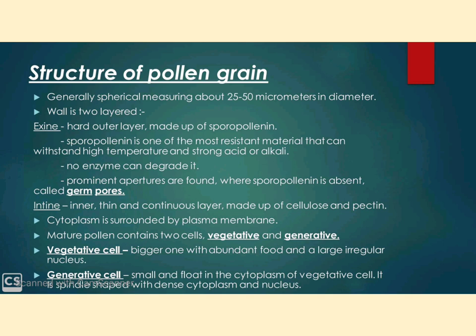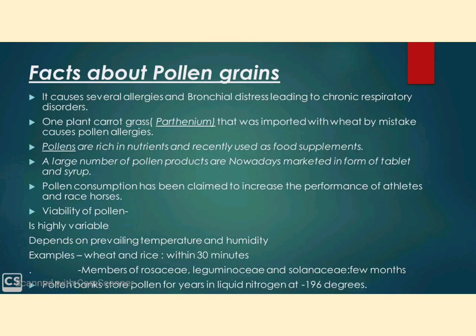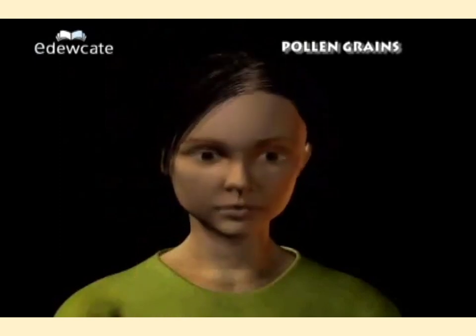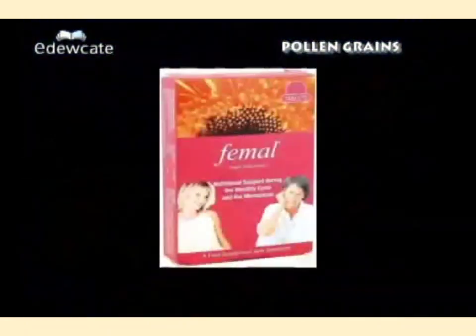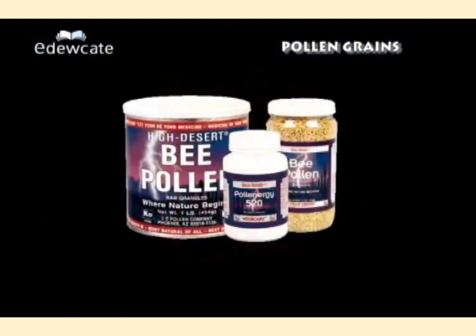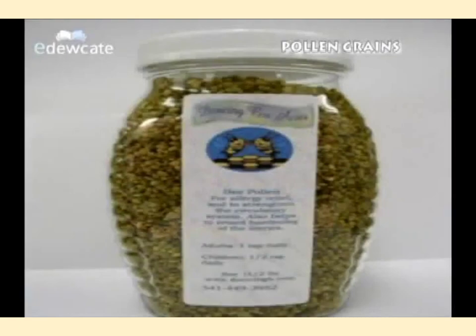Pollen grains are generally spherical, measuring about 25 to 50 micrometers in diameter. Some pollen grains can cause several allergies and bronchial distress that leads to chronic respiratory disorders such as asthma, bronchitis, etc. It can be mentioned that parthenium, that is carrot grass, came to India as a contaminant with imported varieties of wheat and has become ubiquitous, causing pollen allergy. Since pollen grains are rich in nutrients, it has become fashionable in recent years to use pollen tablets as food supplements. In Western countries, a large number of pollen products are available in the form of tablets and syrups. Pollen consumption has been claimed to increase the performance of athletes and racehorses.